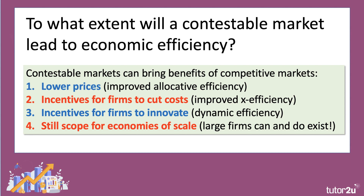First of all, a contest is a battle — a battle for market share, a battle for sales and revenues and ultimately profits. Therefore, we expect to see in a contestable market quite a high degree of price competition between competing firms. If that genuine competition day to day leads to lower prices, that should bring price closer to marginal cost and lead to improved allocative efficiency. We may not necessarily get to the allocatively efficient output, but we may come fairly close.